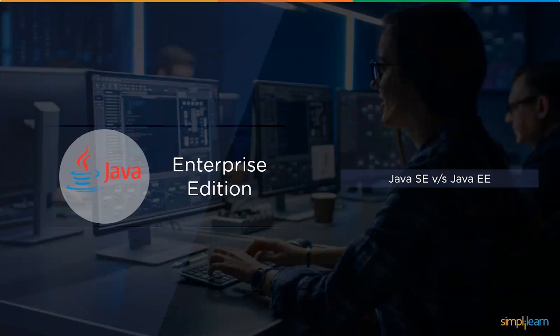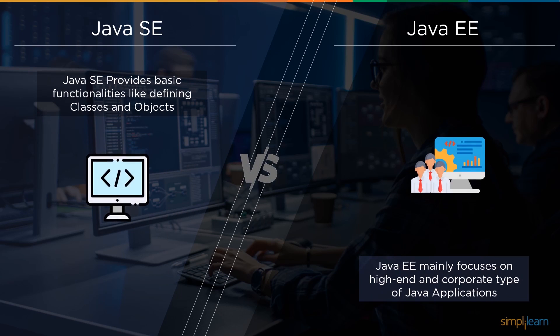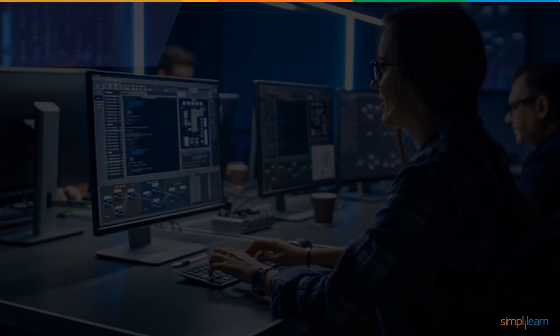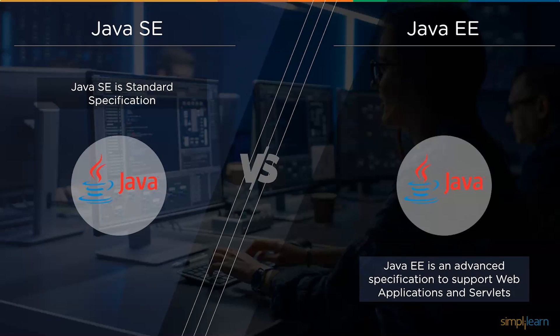Now we will learn the differences between Java Standard Edition and Java Enterprise Edition. First, Java Standard Edition provides basic functionalities like defining classes and objects, whereas Java Enterprise Edition focuses on high-end corporate-type Java applications. Second, Java Standard Edition comes with only standard specifications used by beginners, while Java Enterprise Edition comes with advanced specifications supporting web applications and servlets.